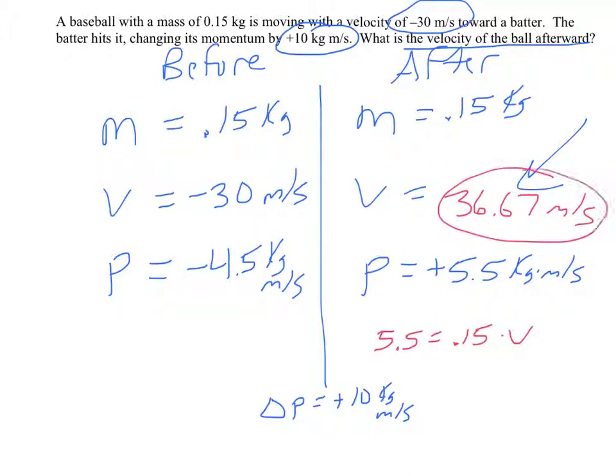And notice this is a positive velocity, that means it's going the opposite way. So the baseball was starting off going 30 to the left, and the batter hit it the other way, 36.67 meters per second. So it was hit faster than it was really pitched, but it's pretty close. So that's how you solve a momentum problem using an MVP chart.